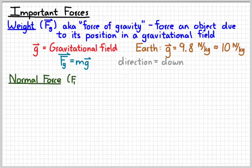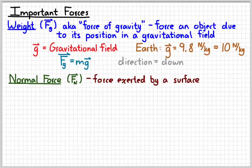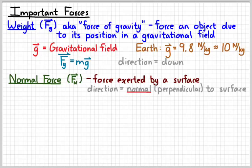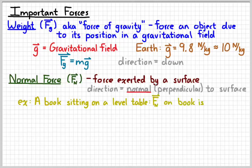The second important force is called the normal force, which has the symbol F subscript N. The normal force is the force exerted by a surface when something is pushing against it. It's referred to as the normal force not because it's the opposite of weird, but because normal means perpendicular to a surface — so it's really a math word. For example, if you have a book sitting on a level table, the table is pushing it upwards, and that force is called a normal force.